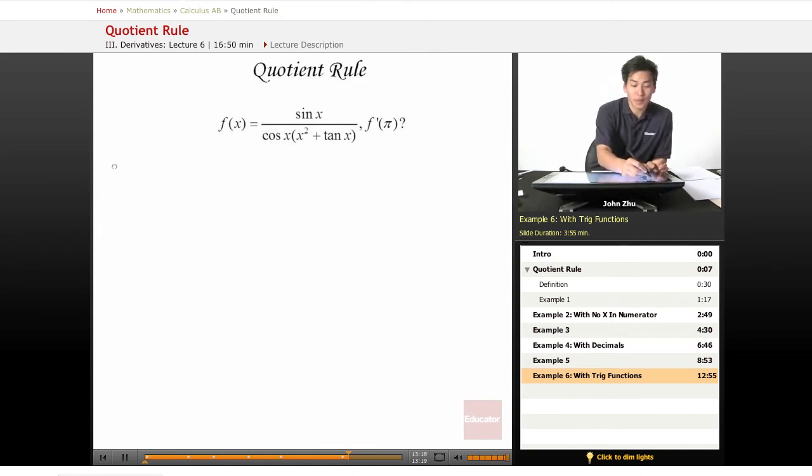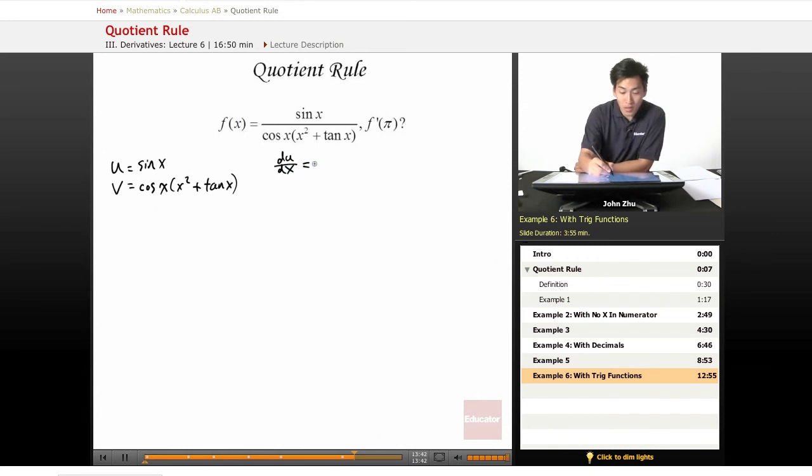So let's set up the quotient rule first. If our u equals sine of x and our v equals cosine x times x squared plus tangent of x, we can say that our du dx equals cosine of x, and our dv dx equals, well we have to apply the product rule first, so we'll come back to that and just leave the term as dv dx.